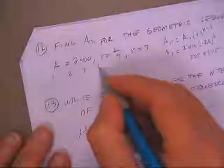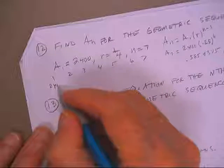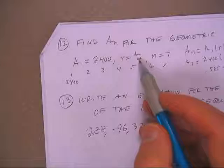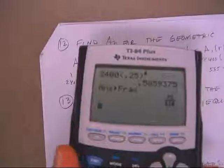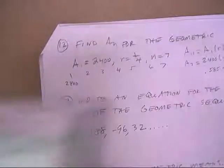1, 2, 3, 4, 5, 6, 7. There's the first one. And every time I multiply by a quarter. So watch this. 2400 times a quarter. There's the second term.